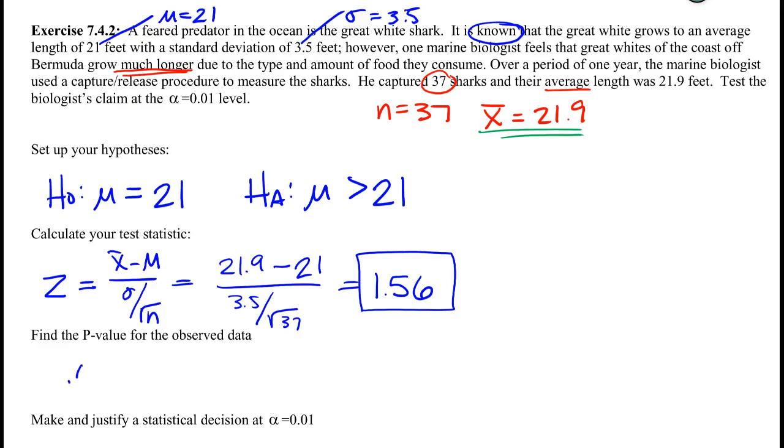So we have 0.0594. We ask ourselves, do I need to multiply this by 2? Look up, it's a one-tailed test. In fact, if I wanted to draw it, if the mean is really 21, what's the probability we get 21.9 or something longer than that? No need to multiply by 2. This is my p-value, it's done.